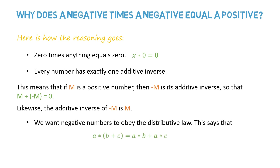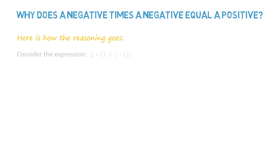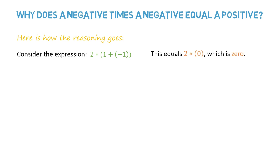We want negative numbers to obey the distributive law. This says that the product of a, and b plus c, equals a times b, plus a times c. Consider the expression: the product of 2 and 1 plus minus 1. This equals 2 times 0, which is 0.